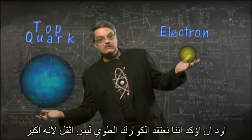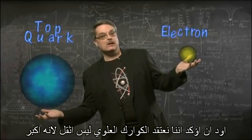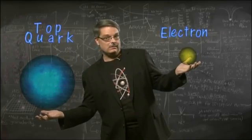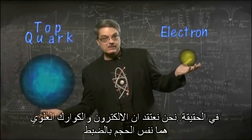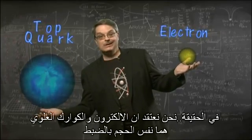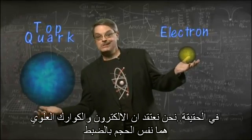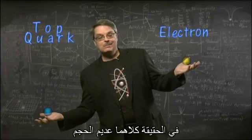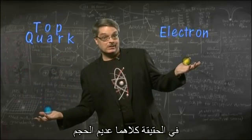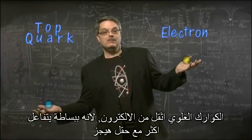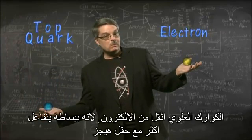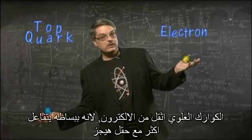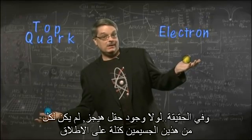I'd like to stress that we believe the top quark is not more massive because it's bigger — it's not. In fact, we believe that both the top quark and the electron are exactly the same size. Indeed, they both have zero size. The top quark is more massive than the electron simply because it interacts more with the Higgs field.